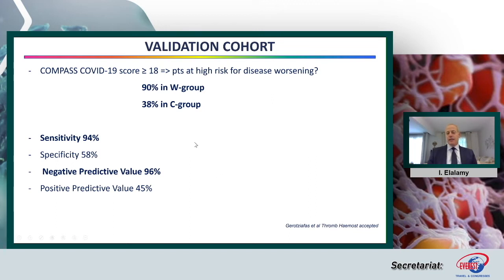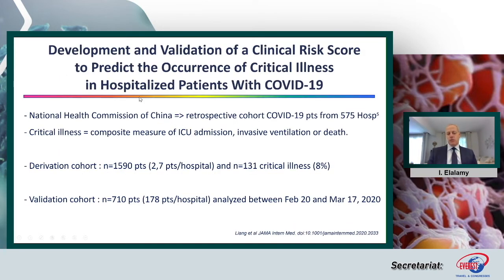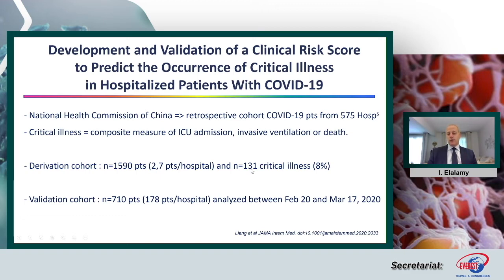Very recently, another clinical risk scoring was published to predict critical illness in COVID-19 hospitalized patients — a Chinese scoring. They based their analysis on a retrospective cohort from the National Health Commission of China, involving more than 575 hospitals — a huge scale. However, the criteria were a composite of ICU admission, invasive ventilation, and death. The derivation cohort was only 1,590 patients, given the very limited number of patients per hospital across 575 hospitals, with a very small group for critical illness.